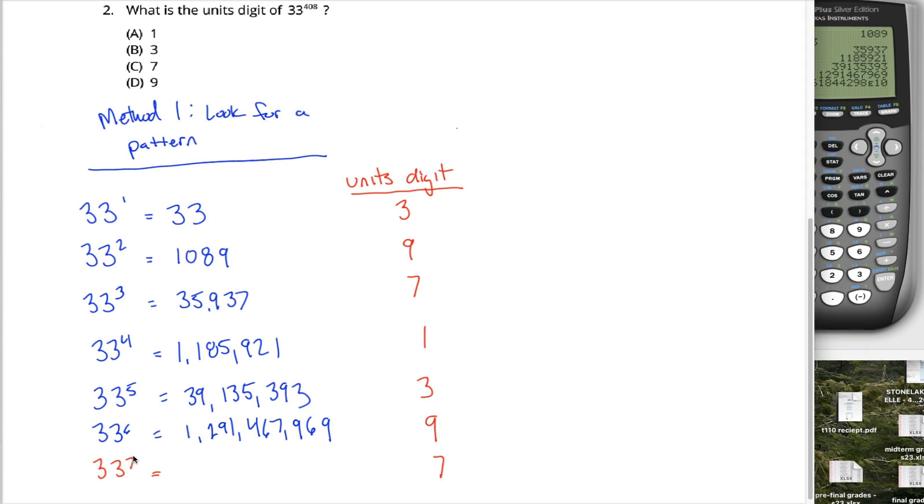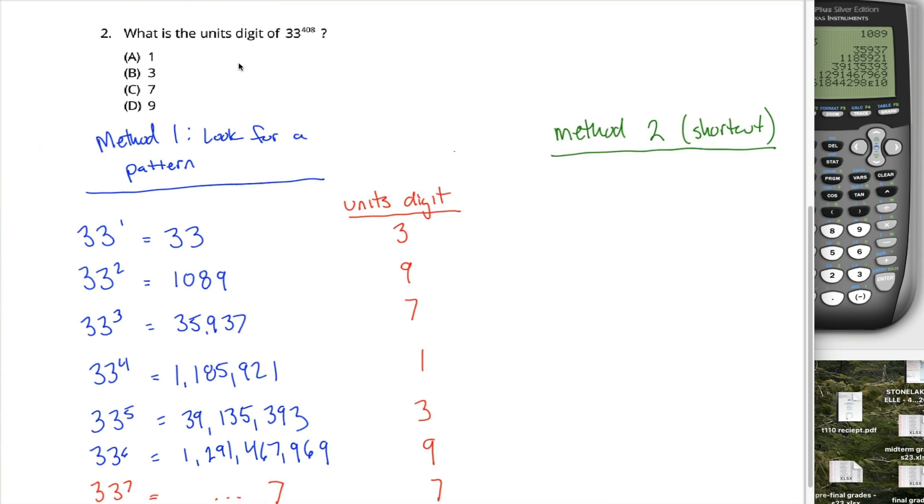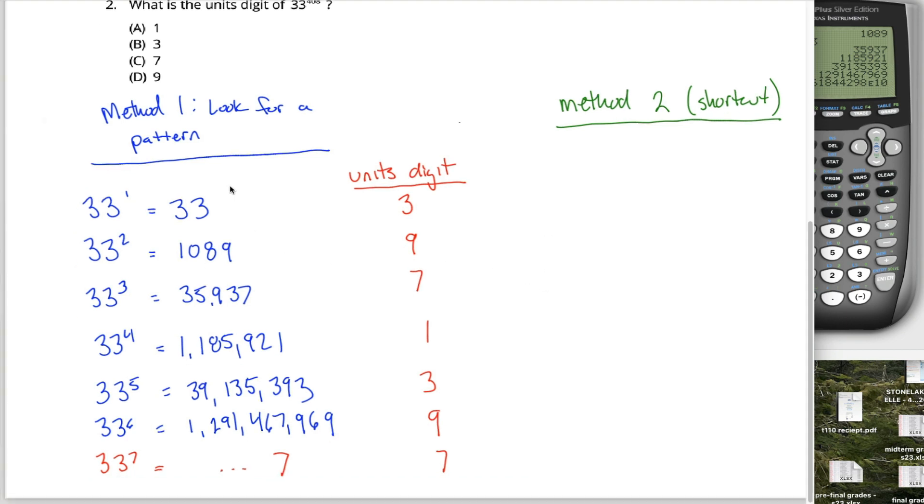How do I know that? Because 33 to the seventh power is 33 to the sixth power times 33 and 33 to the sixth power ends in a nine. And if I take a number that ends in a nine and I multiply it by a number that ends in a three, I'm going to end up with a number that ends in a seven because nine times three equals 27. Whoa, wait, what just happened there? If you can recognize that the unit's digit of a product only comes from the unit's digit of the two numbers you're multiplying together to get that product, you can cut this method down significantly.